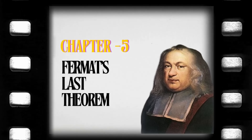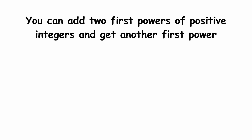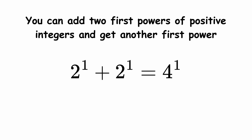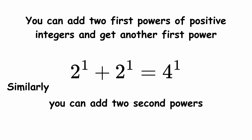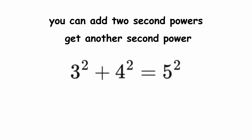Fermat's Last Theorem. You can add two first powers of positive integers and get another first power — for example, 2 to the first plus 2 to the first equals 4 to the first. Similarly, you can add two second powers and get another second power — for example, 3 squared plus 4 squared equals 5 squared. This will be familiar to those who know the Pythagorean Theorem.